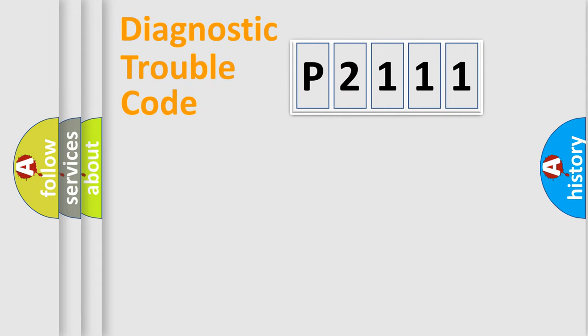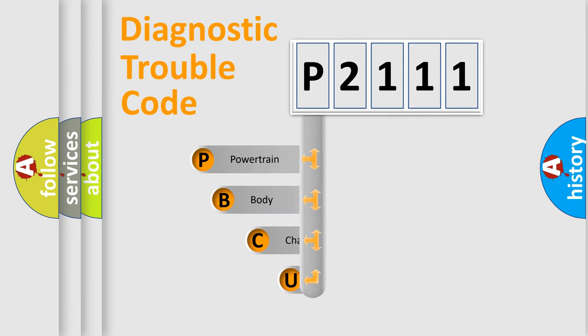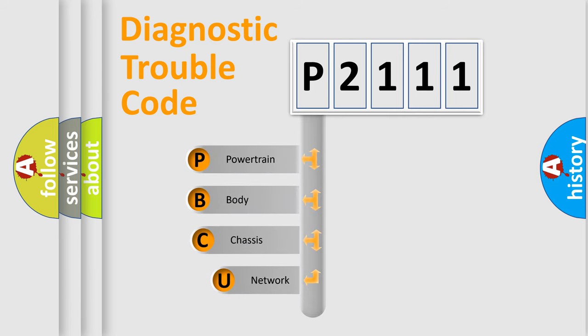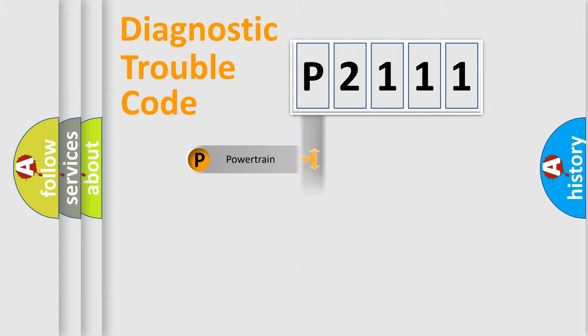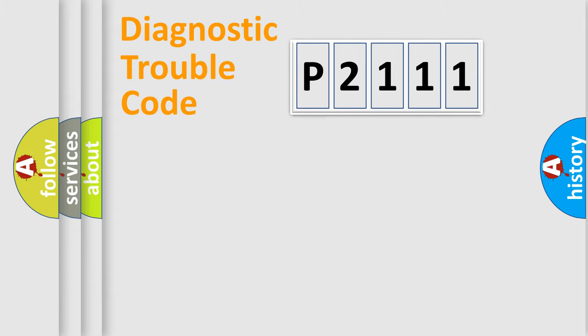Let's do this. First, let's look at the history of diagnostic fault code composition according to the OBD2 protocol, which is unified for all automakers since 2000. We divide the electric system of the automobile into four basic units: Powertrain, body, chassis, and network.